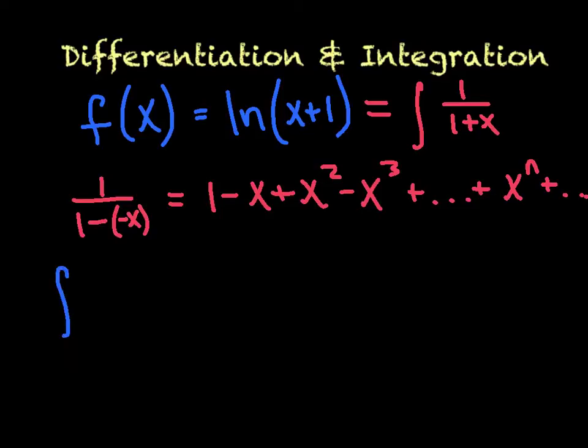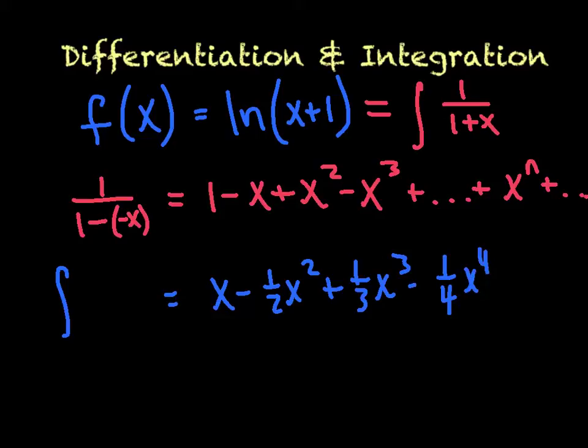Now what I could do is all I've got to do is integrate term by term to get my blue function. So as I get ready to integrate that rascal, it's going to be x minus 1 half x squared plus 1 third x cubed minus 1 fourth x to the fourth. And how about 1 over n plus 1 x raised to the n plus 1. So if you recognize the shortcut, you can really save yourself a lot of time.